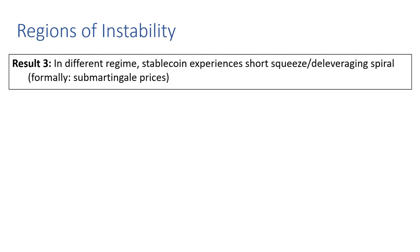We also show very different results in what we characterize as an unstable region. The stablecoin experiences a short squeeze — or what we call a deleveraging spiral — in this unstable region. Formally, this deleveraging spiral is characterized by submartingale prices in the stablecoin, meaning that we expect the stablecoin price to actually increase in this setting.